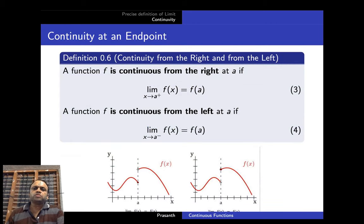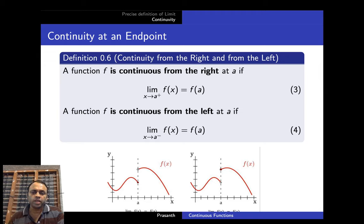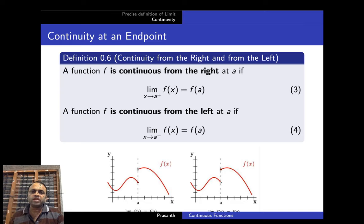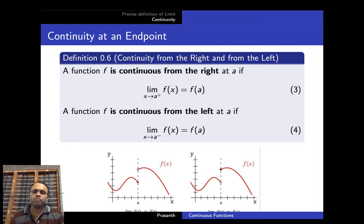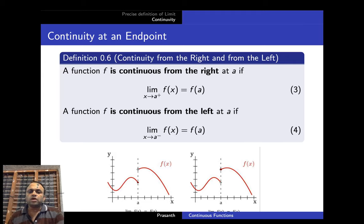Now what do we mean by continuity from the right and from the left? A function f is said to be continuous from the right at x = a if limit x→a⁺ f(x) = f(a), meaning x approaches a from the right. Similarly, f is continuous from the left at a if limit x→a⁻ f(x) = f(a), meaning x approaches a from the left. Our domain is the real line, so at any point we can approach only from the left or the right.